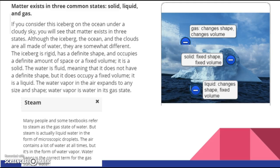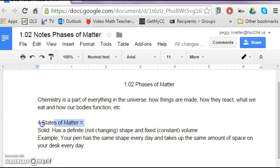So, let's add that to our notes. So, under our four states of matter, our first one is a solid, and a solid has a definite, meaning not changing shape. And a fixed, or constant, volume. Example, your pen has the same shape every day, and it takes up the same amount of space on your desk every day. So, therefore, it's a good example of a solid.